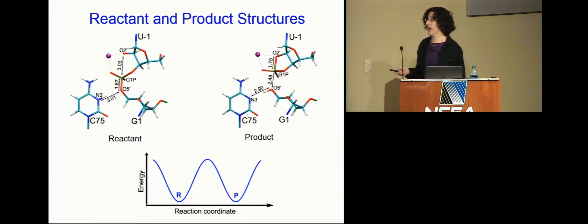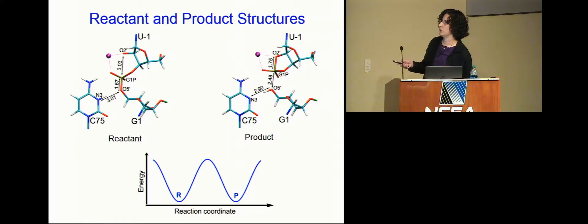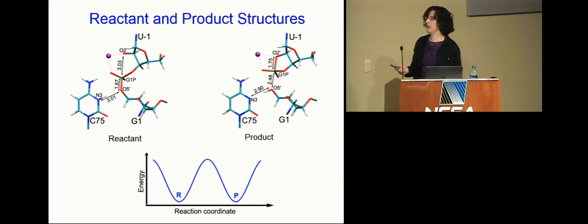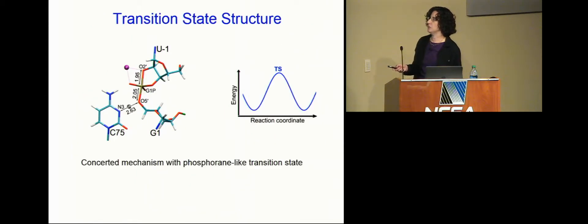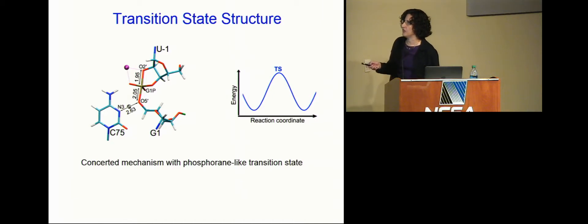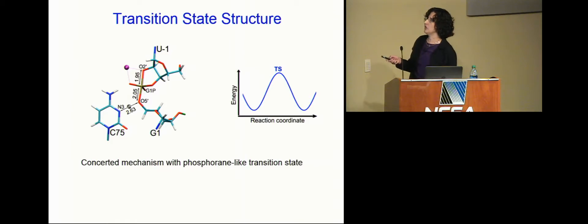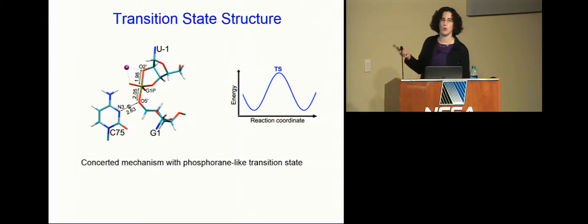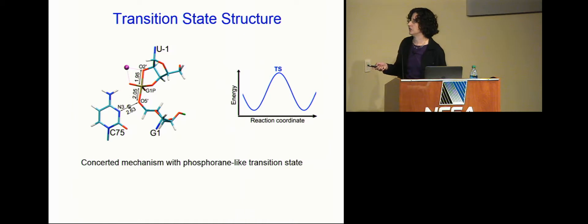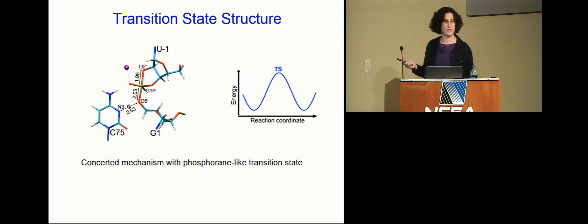We calculated the reactant and product minima, showing the bond has formed and broken. We then calculated the transition state — the saddle point connecting them on the potential energy surface — and characterized it as a phosphorane, where the phosphorus is bonded to five different things. We showed it's a saddle point, indicating a concerted mechanism: reactant goes to product over only one barrier, with no stable intermediate. That's important information for the experimentalists.